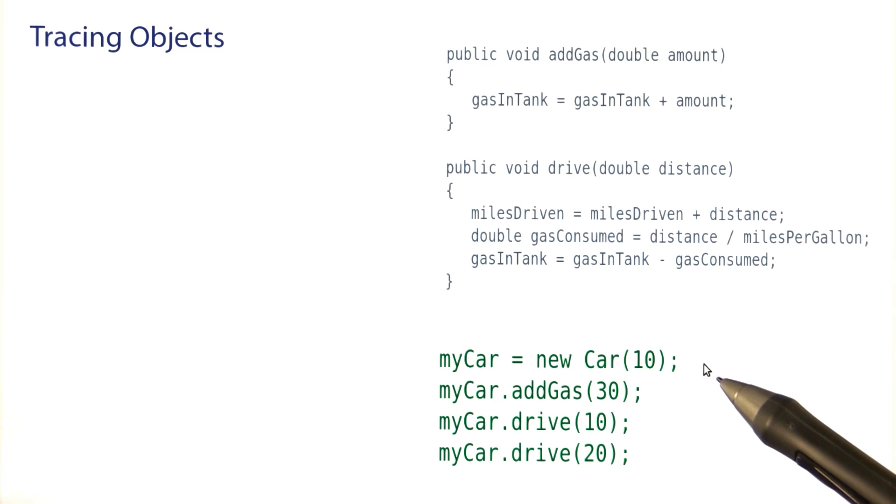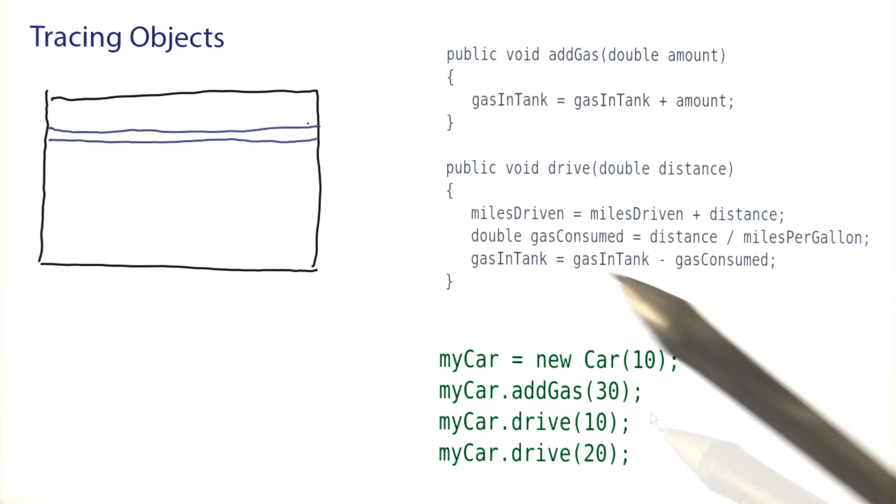Pick some scenario that exercises these methods. Like here I'm making a car, I add gas, I drive it, and I drive it a bit more. And now we want to understand what do these method calls do to the car? It's very low tech.